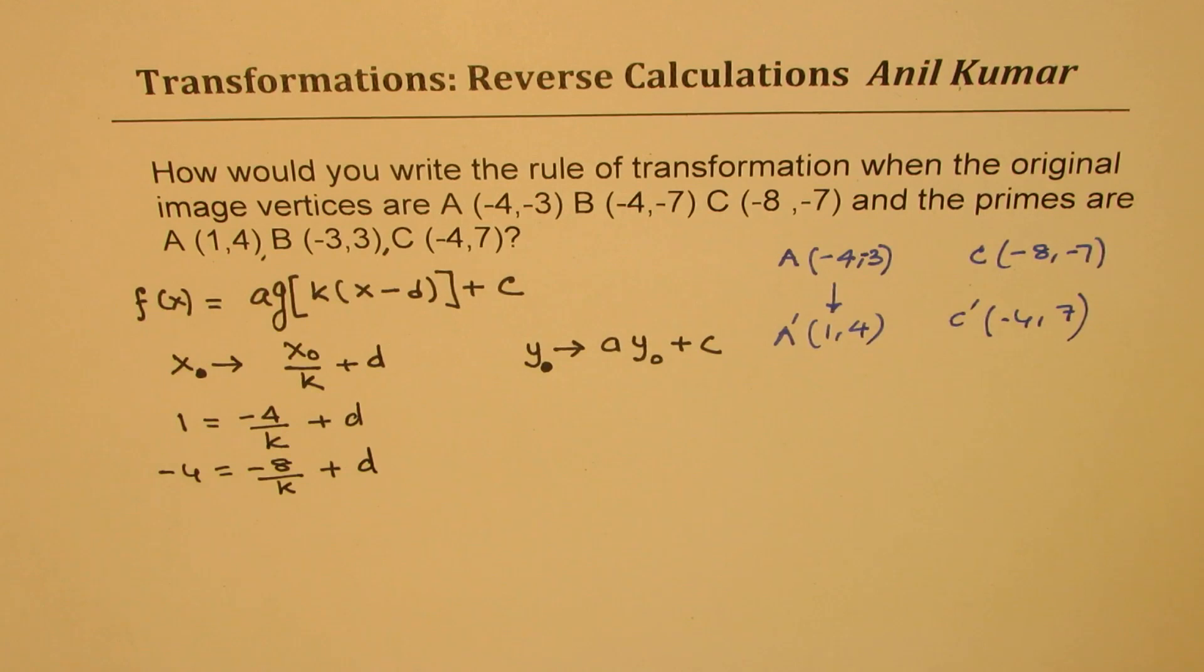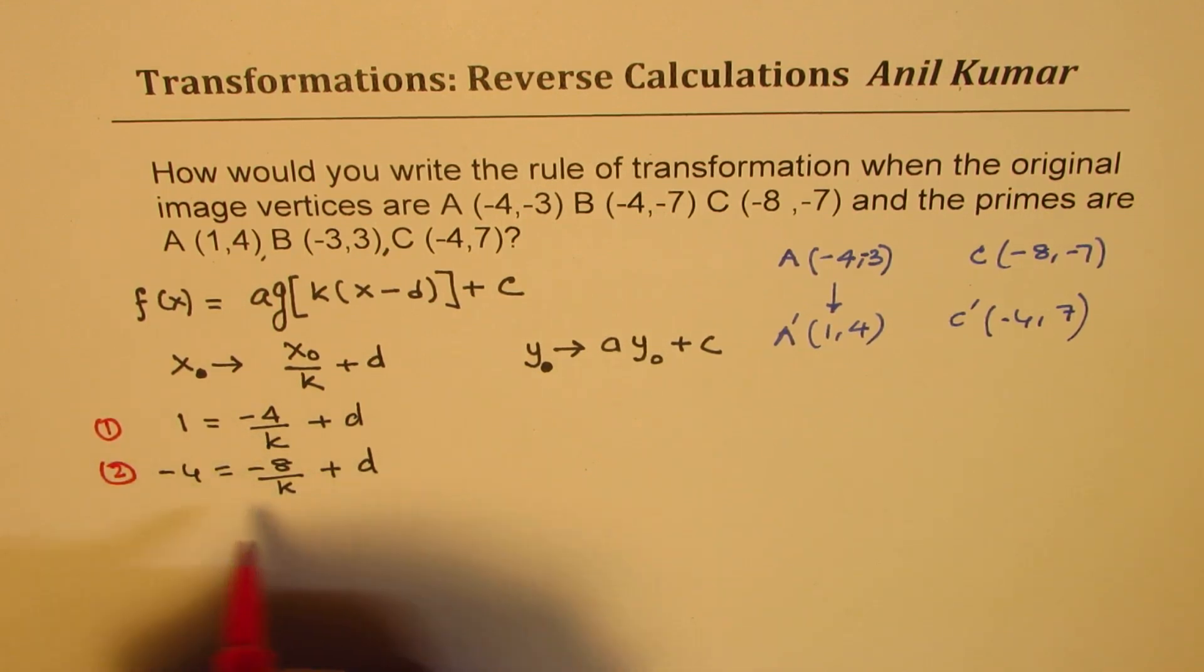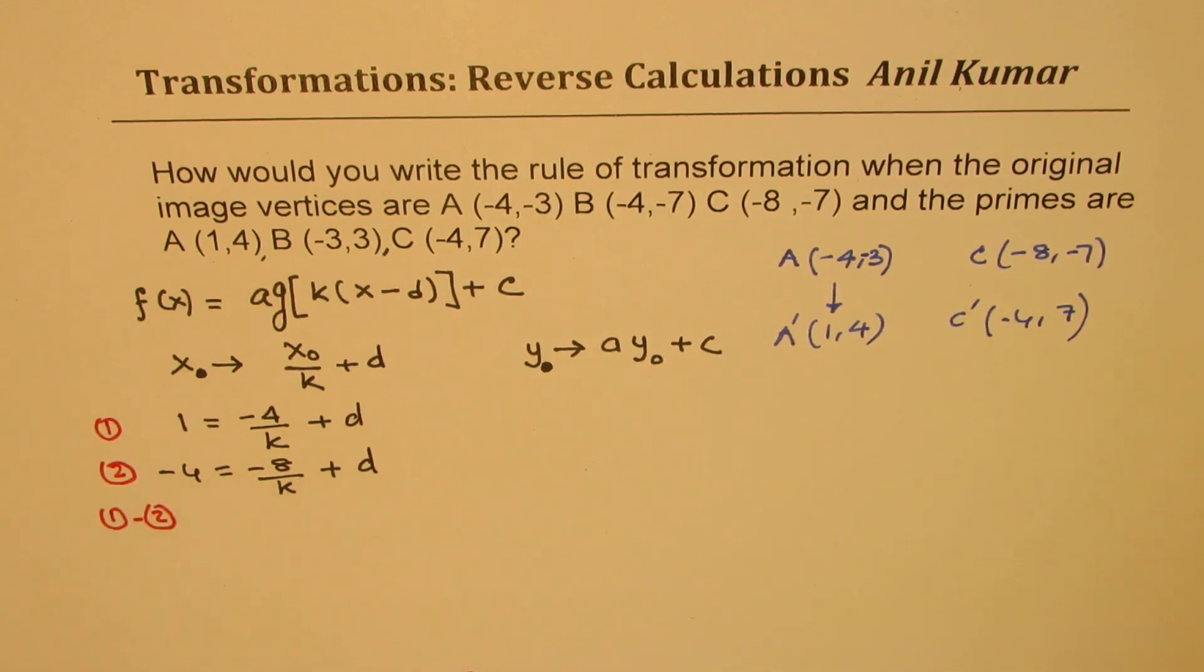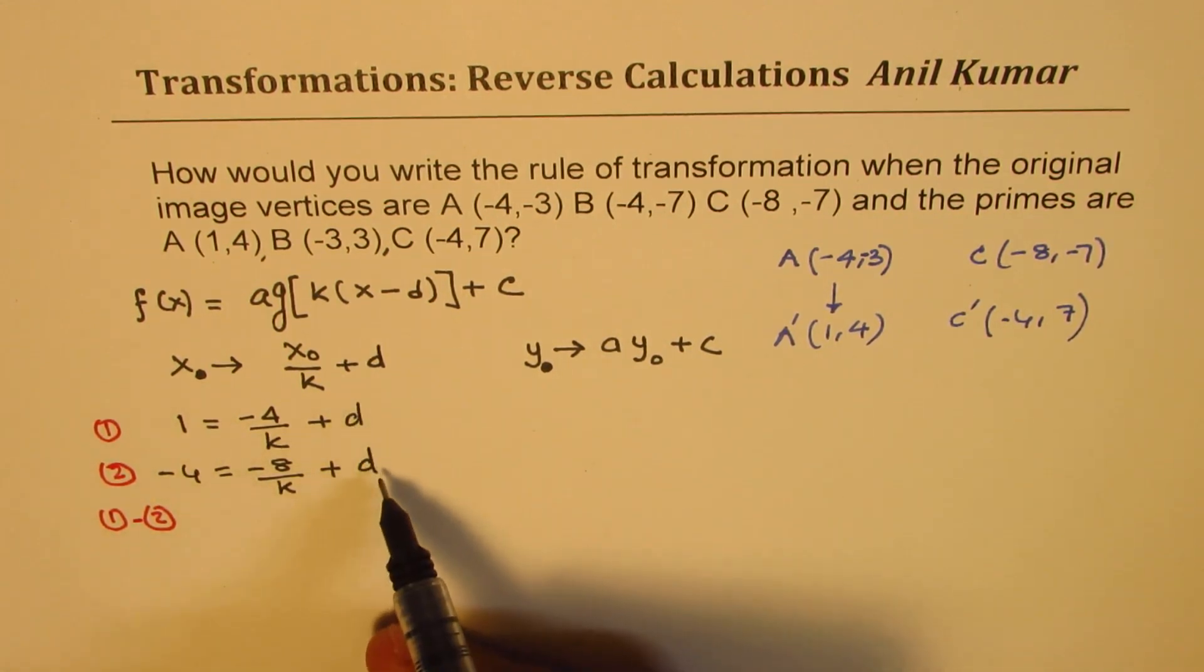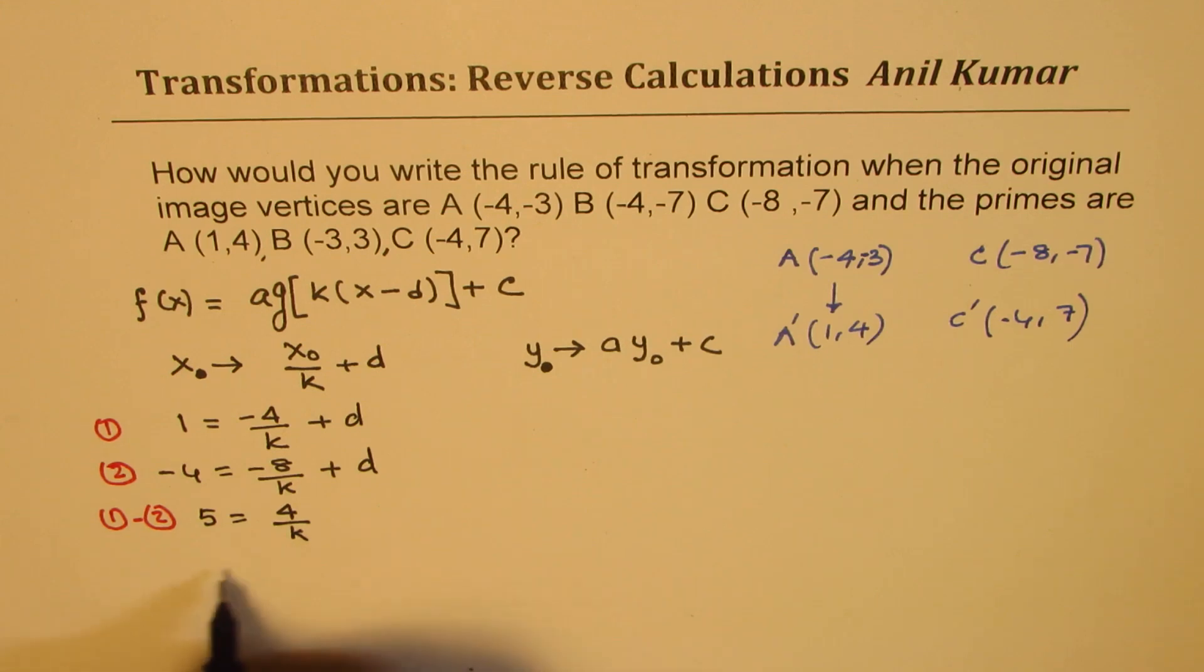So we have two equations. Now we can easily find both variables. If I do equation 1 minus equation 2, then the d's cancel away and we get 5 = 4/k, which gives you the value of k as 4/5.